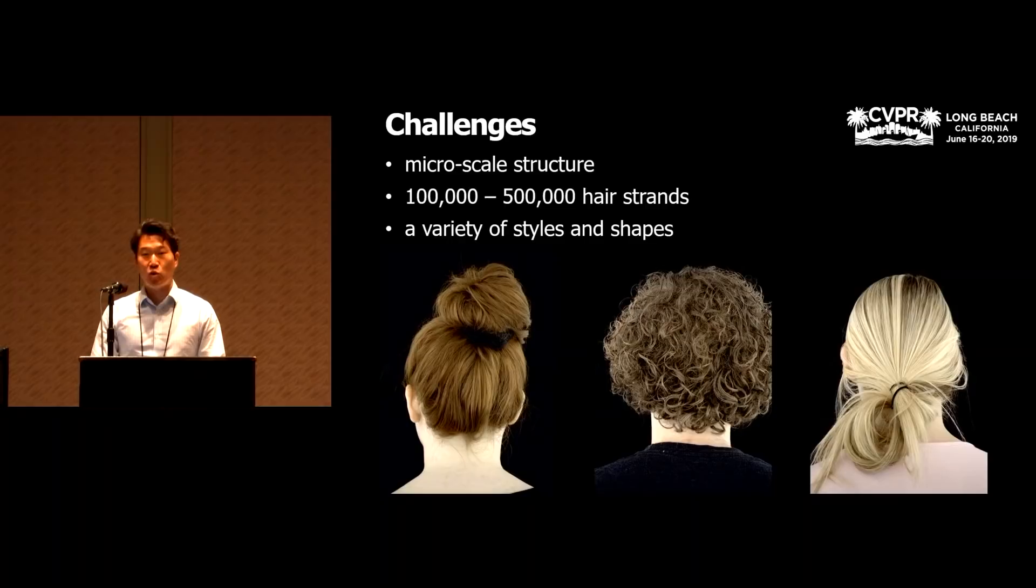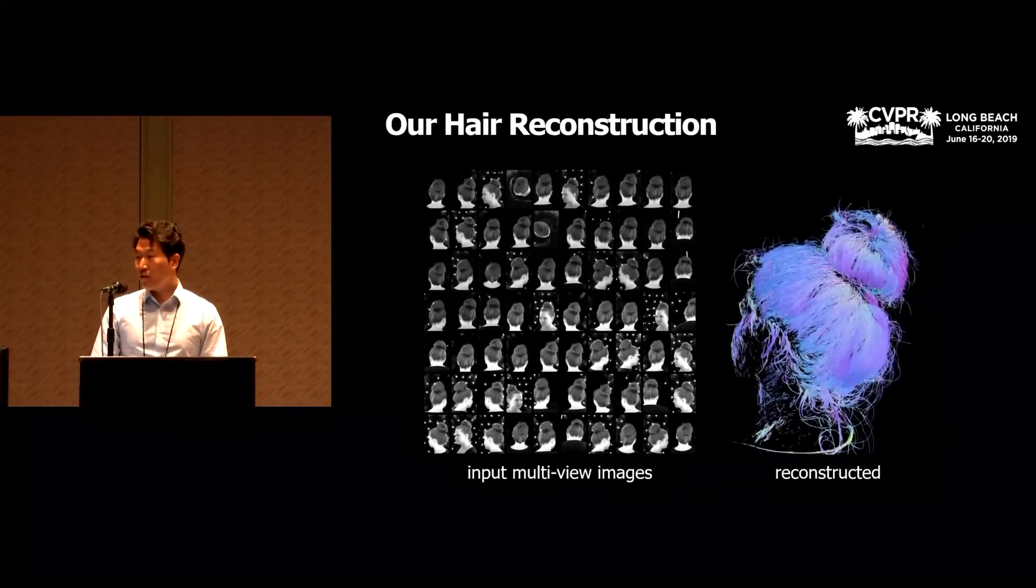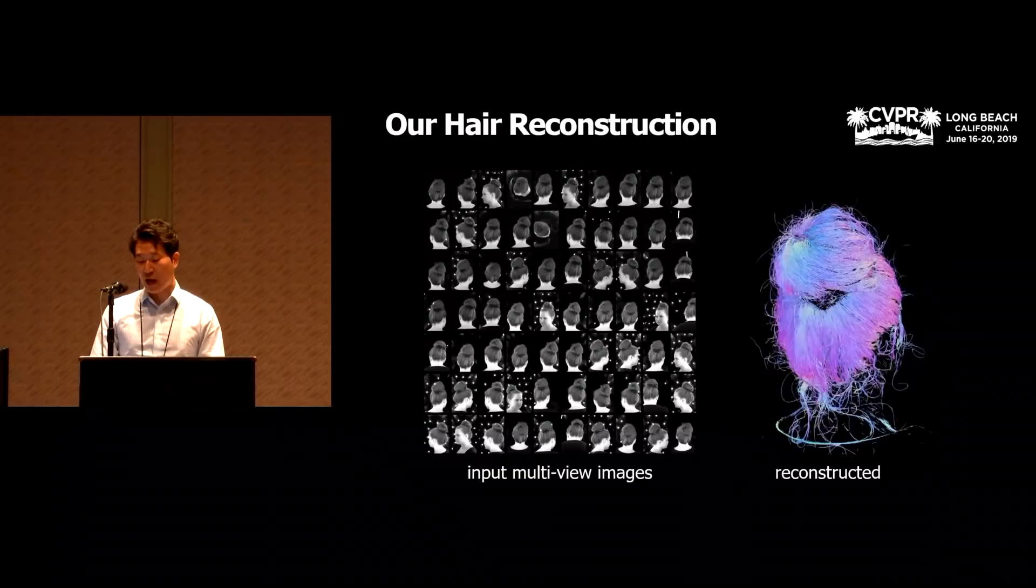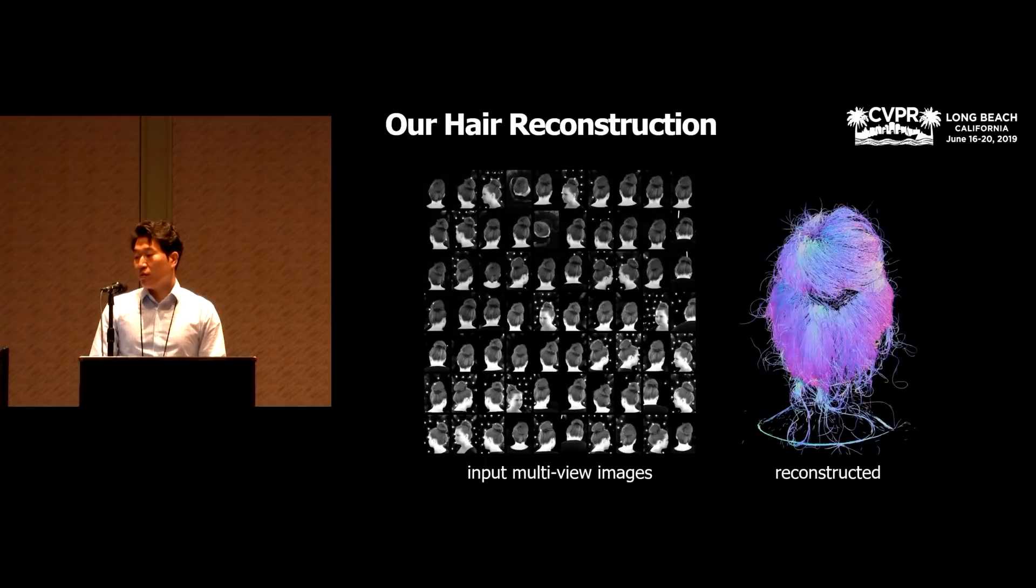This is mainly because hair is one of the most challenging objects to reconstruct. It has micro-scale structure, and there are a large number of hair strands. Also, there is a variety of styles and shapes. For these reasons, traditional 3D reconstruction methods are not applicable to hair. And here we introduce a new method to reconstruct 3D hair models with strand level accuracy. The input of our method is multi-view images, and the output is a 3D model of hair strands.